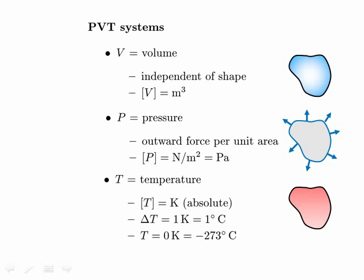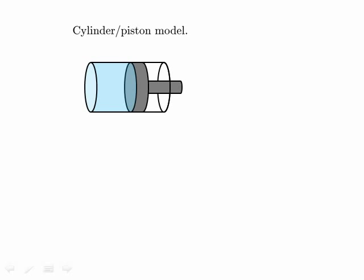A PVT system may be a solid, a liquid, or a gas — its phase may depend on P, V, and T. In general, we'll call a PVT system a fluid. One nice way to think about a PVT system is to imagine it in a cylindrical container with a movable piston on one side. Nothing important depends on the shape, so we might as well choose a convenient shape like a cylinder.